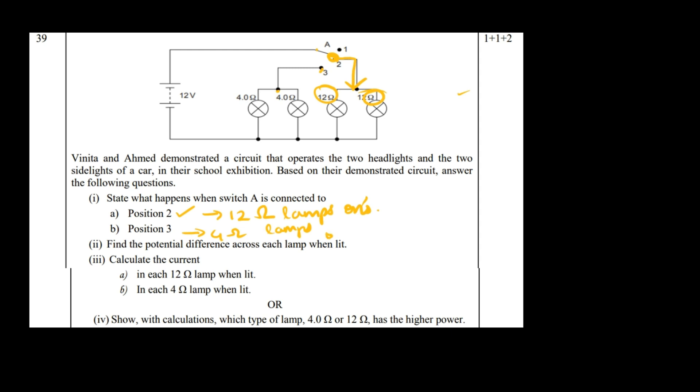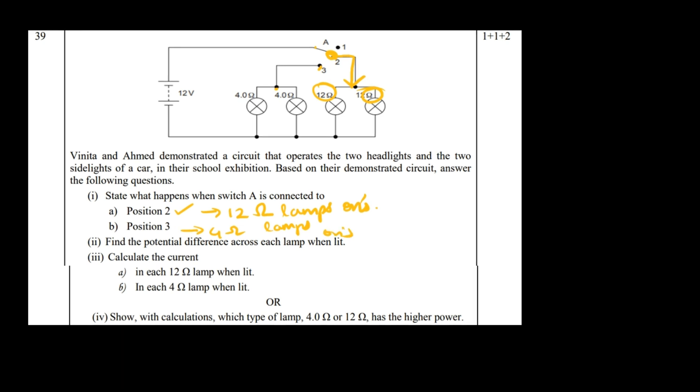Potential difference across each lamp when it's lit: Can you see they're all connected in parallel connections? If they're connected in parallel, the potential difference remains the same - 12 volts. That's enough, move on to the next one.